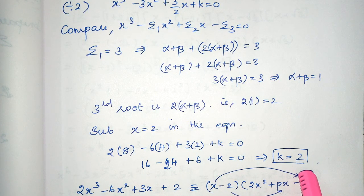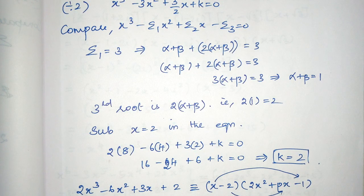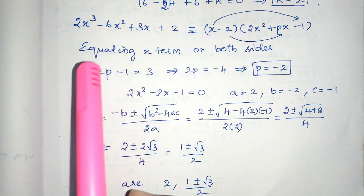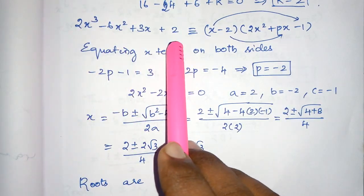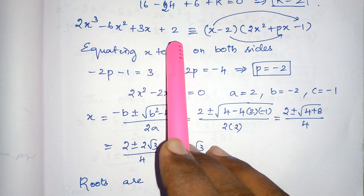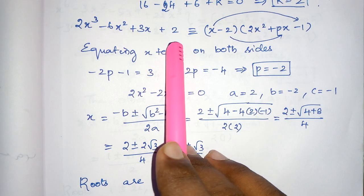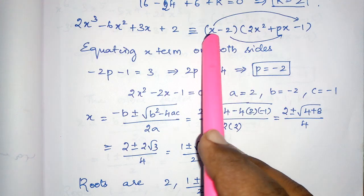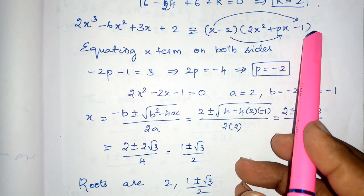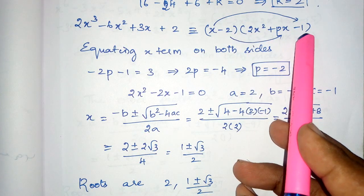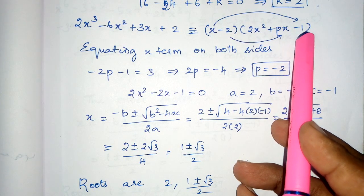k is equal to 2. Now, we have found the value of k. Now, this is the equation, which is given here. Now, we have found the third root is nothing but 2. So, we can take x minus 2 as a factor. This remaining factor, how to found, I already taught you in the previous problems. Anyhow, I explain once again.